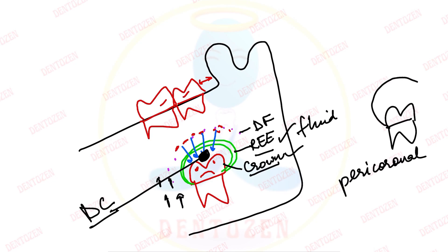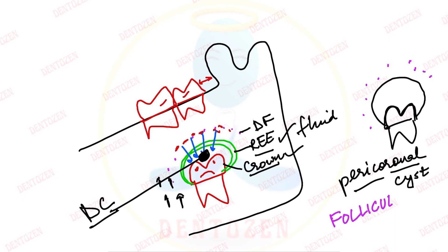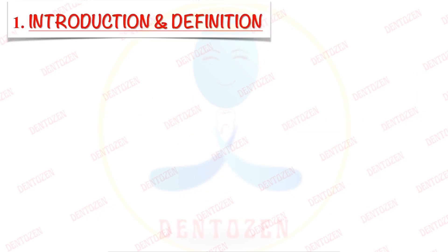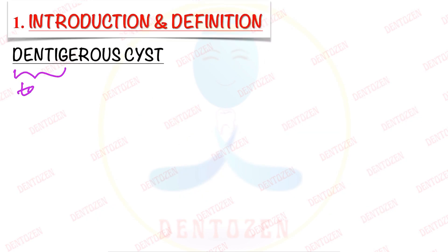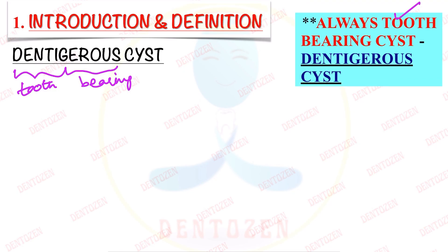Dentigerous cyst forms by fluid accumulation between the reduced enamel epithelium and the crown of an unerupted tooth. It is also called a pericoronal cyst ('peri' = around, 'coronal' = crown) and a follicular cyst because it forms by expansion of the dental follicle. 'Denti' means tooth and 'gerous' means bearing — so this is always a tooth-bearing cyst. That is your entrance question.